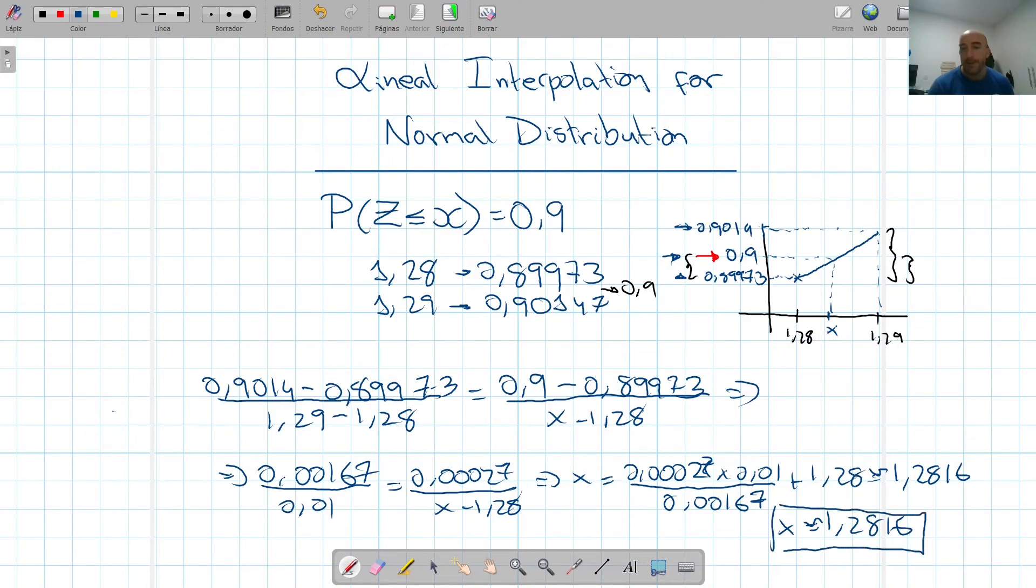So linear interpolation, how to obtain a value when we don't have it in our table, supposing that the values vary in a straight line. They don't really. It's a curve. But if we take small enough differences, we can suppose that it's a straight line. It's a reasonable enough interpretation.